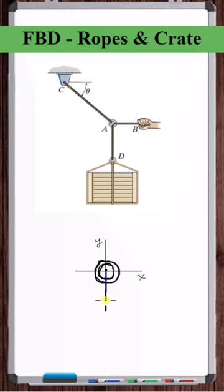The force from rope AB is acting down, and the force in this rope is equal to the weight of the crate. The force in rope AB has to be acting to the right. The rope is in tension.